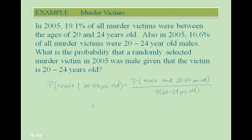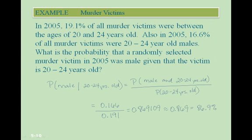The probability that murder victims were 20 to 24 years old and male was 16.6%, or 0.166 as a decimal. We divide that by the probability that murder victims were between the ages of 20 to 24, which was 19.1%, or 0.191 as a decimal. When we divide, we get approximately 0.869, which means 86.9% of randomly selected murder victims were male given that they were 20 to 24 years old.